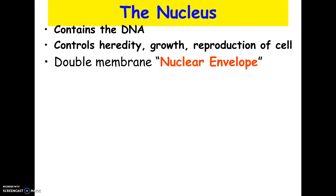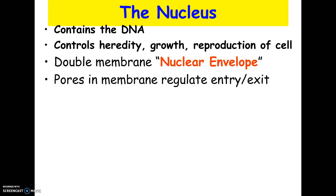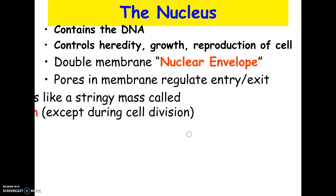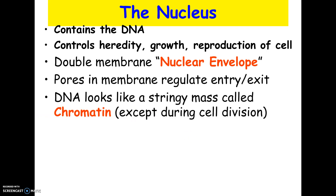The nucleus has a double membrane around it called the nuclear envelope, and it has little pores in it which can control what enters and leaves the nucleus. Just like the cell membrane controls what enters and leaves the cell, the pores control what enters and leaves the nucleus.